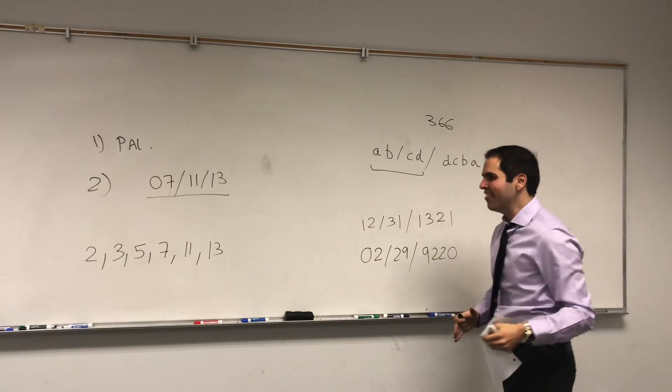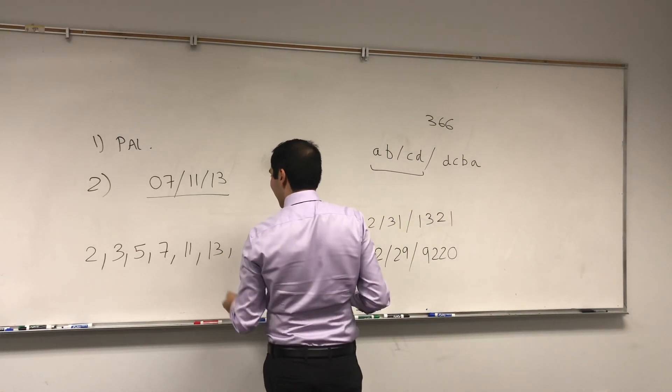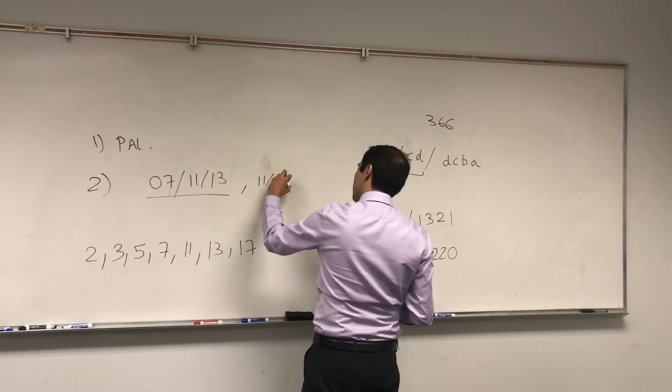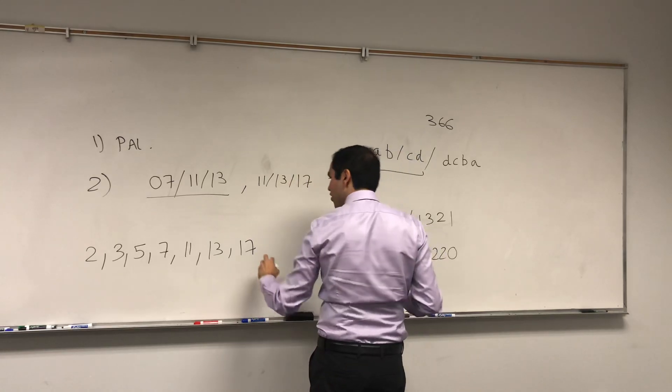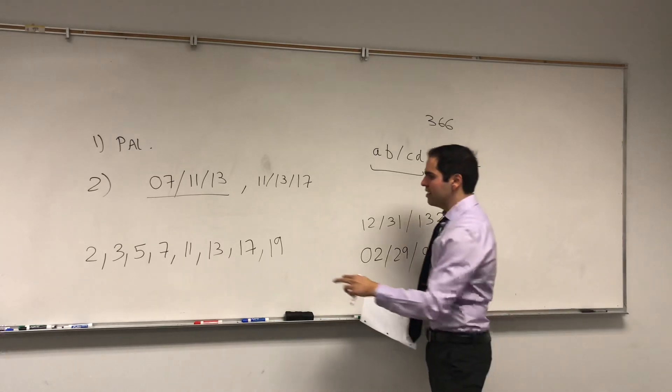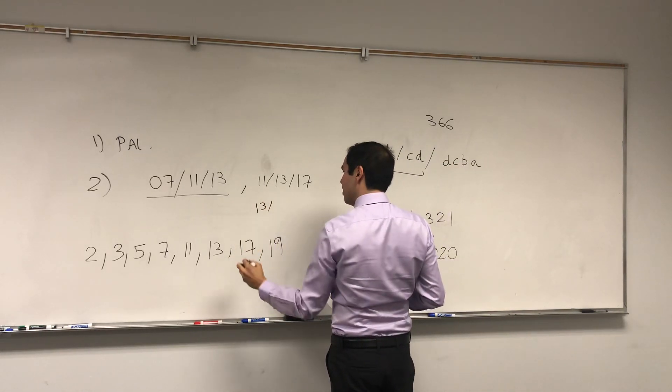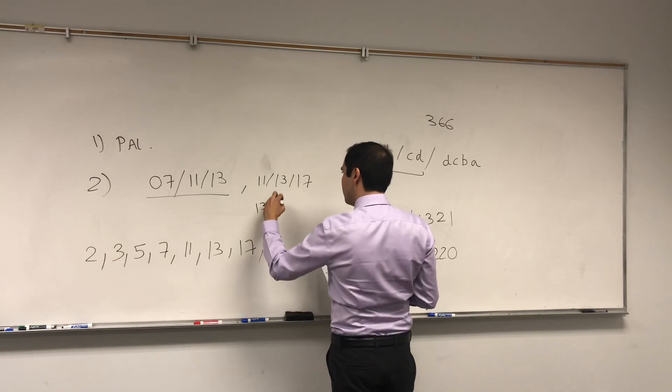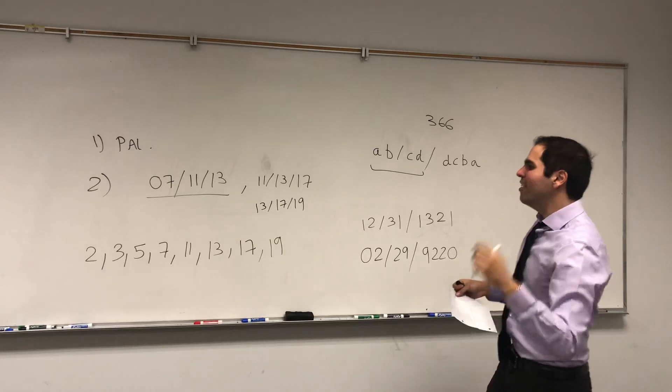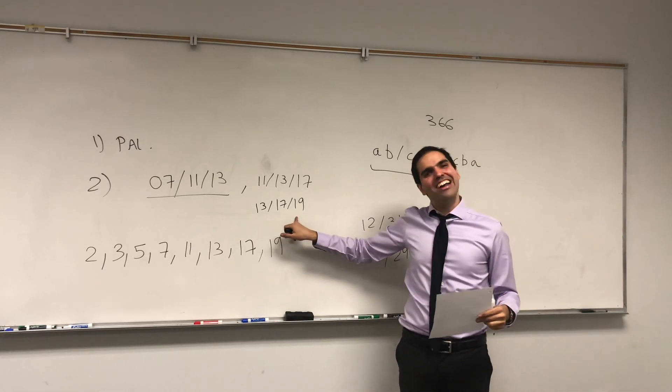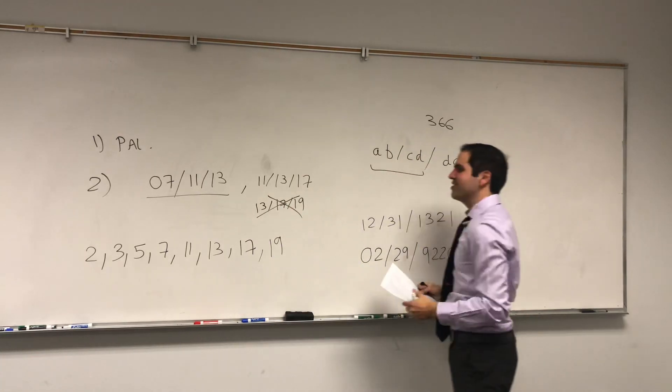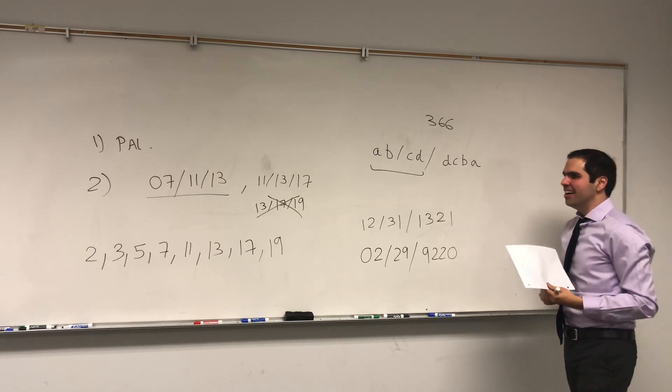So 7, 11, and 13 was a prime year. And I think Amazon Prime got very excited about that. But the next one, I think, was 11, 13, 17. But unfortunately, that was the only prime year in the century, because the next one would be 13, 17, 19. Unfortunately, this is not a valid date. There's no 13th month. So this doesn't work.